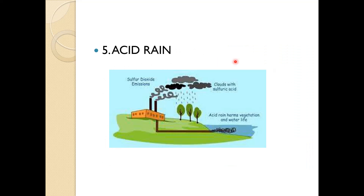Next is acid rain. We have learned about acid rain in the air pollution topic. It is caused by sulfur dioxide or nitrogen dioxide emissions, which form nitric acid or sulfuric acid that falls on the ground. This same acid mixes with water sources and harms aquatic life such as fish and other organisms in the water.